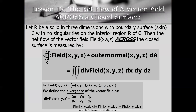The best way to introduce curl is to go back and talk about divergence for a minute. Think back to lesson eight — computing the divergence of a 2D vector field was pretty straightforward: you just computed dM/dx plus dN/dy. Then in lesson 12, working in three-dimensional space, 3D divergence is not much different. It's dM/dx plus dN/dy plus dP/dz. You just add one more term, one more partial derivative.